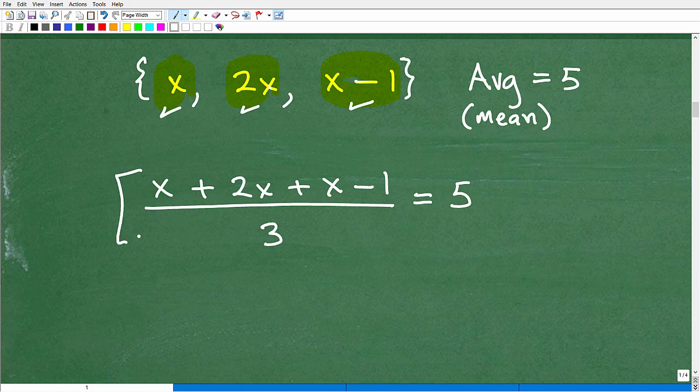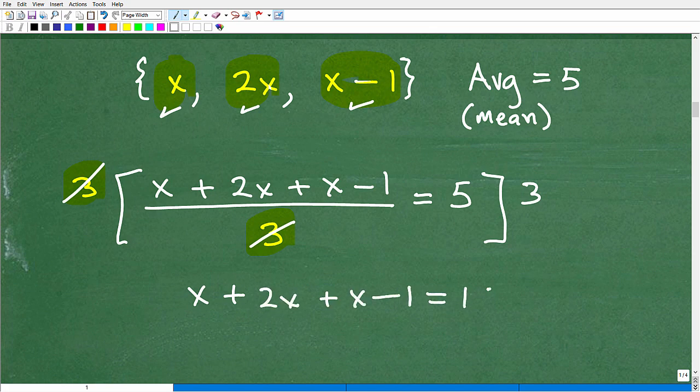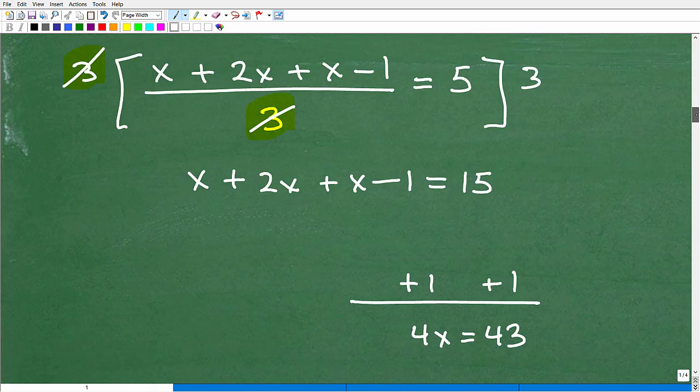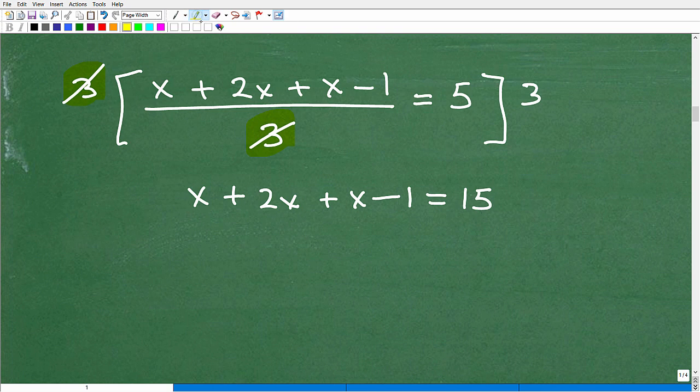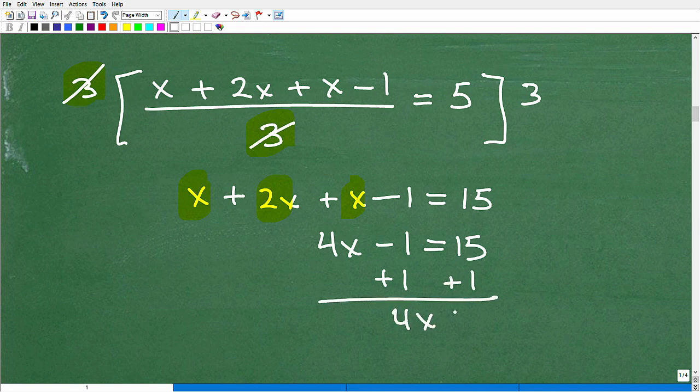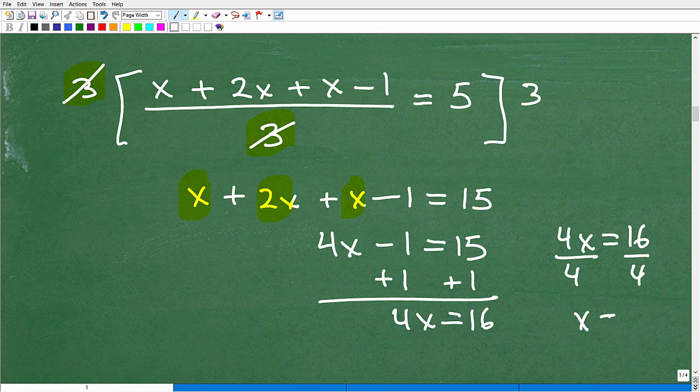This is basically it. If you can solve this equation, you're going to get your answer. How would I solve this equation? The easiest way is to multiply the entire equation by 3. So 3 times 3, the 3s cross cancel here. But I also have to multiply this side by 3. So I'm going to end up with x plus 2x plus x minus 1 equals 15. Now let's solve for x. I have x plus 2x plus x - that gives me 4x minus 1 equals 15. If I add 1 to both sides, I get 4x equals 16. Divide both sides by 4, and I get x equals 4.